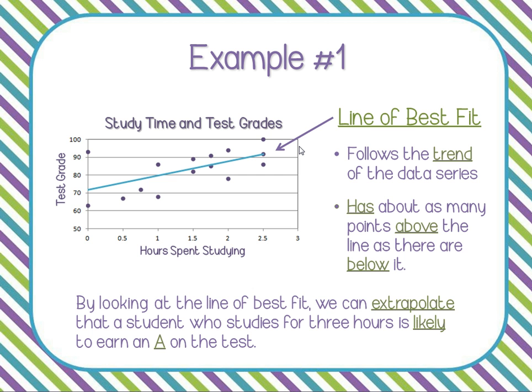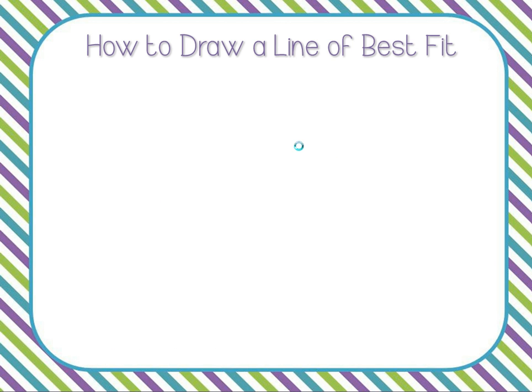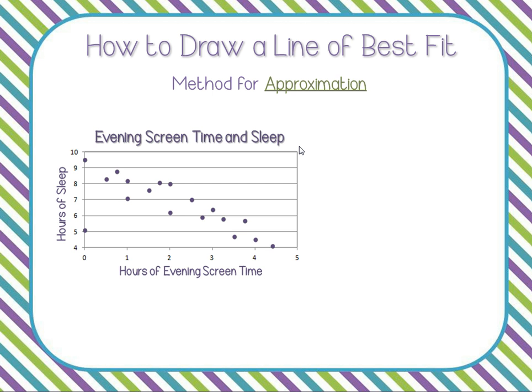Our standard says we need to be able to draw our own line of best fit — really, what we need to do is estimate it. There is an actual mathematical way to calculate it, but we're not going to learn that in eighth grade. What the state of Texas is asking us to do is just look at a scatter plot and eyeball the line of best fit. I'll show you a method for doing that. After enough practice, you probably won't even need the method — you'll just be able to put a good approximation down.